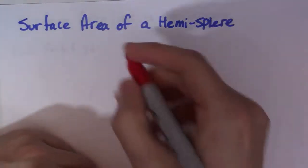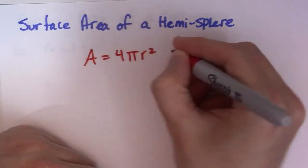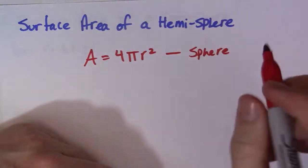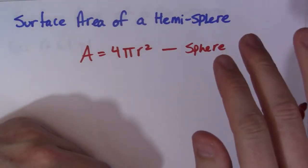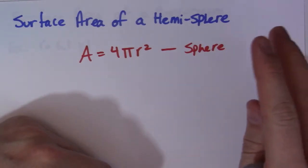So, the area of a sphere is 4πr², so that's the area of a sphere. The area of a hemisphere is not exactly half of that, it doesn't work like volume. When you divide something in half, with volume you get exactly half.